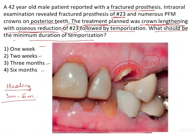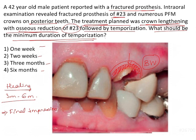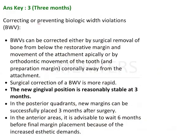For soft tissue and hard tissue healing, the question asks: what should be the minimum duration of temporization — that is, when will you make the final impression? The duration of temporization spans from the preparation of the tooth periodontally and prosthetically until you are keeping the temporary. In one or two weeks you cannot allow bone to heal completely, as it is a slow process requiring remodeling. So we consider three months and six months.